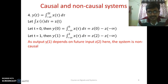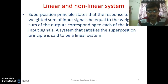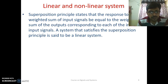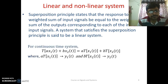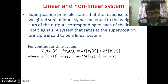Now we will go to linear and non-linear systems. A system is said to be linear if it satisfies the superposition principle. The superposition principle states that the response to a weighted sum of inputs must be equal to the weighted sum of outputs corresponding to each of the individual inputs. For continuous time systems: T{a·x₁(t) + b·x₂(t)} = a·T{x₁(t)} + b·T{x₂(t)}, where a·T{x₁(t)} = y₁(t) and b·T{x₂(t)} = y₂(t).